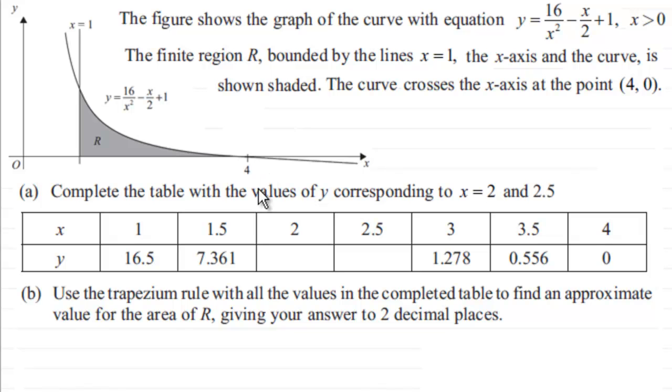And what we've got to do is complete the table with values of y corresponding to x equals 2 and 2.5. And then go on to use the trapezium rule with all the values in the completed table to find an approximate value for the area of R, giving your answer to two decimal places.